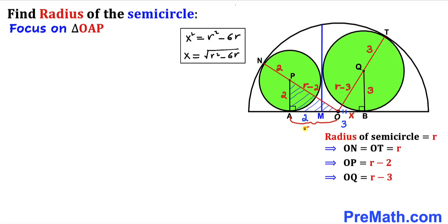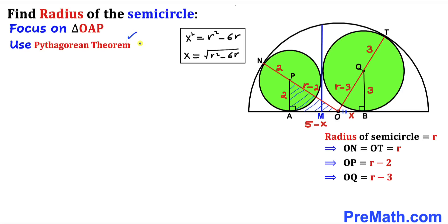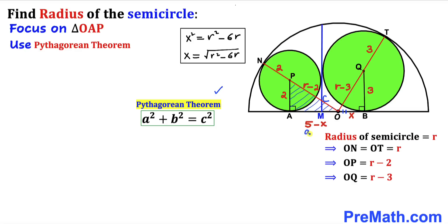Since the distance from O to B is x, the distance OA is 5 − x. Applying the Pythagorean theorem to right triangle OAP: a² + b² = c². We identify side a as (5 − x), side b as 2, and the hypotenuse c as (r − 2). So the equation is: (5 − x)² + 2² = (r − 2)².